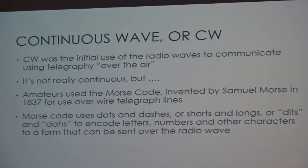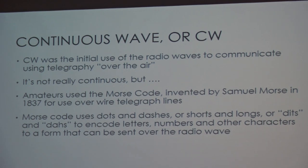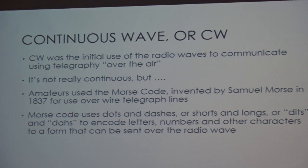Now, the first one we're going to talk about is CW, or continuous wave. I've always had a problem with that term, because continuous wave kind of implies that the signal's going to be continuous. Well, it's not — it's kind of broken up into dots and dashes. But they call it continuous wave because the signal being sent, instead of being modulated and having voice or other information on it, all it did was send a wave. So they called it continuous wave, even though I still have a problem with that term.